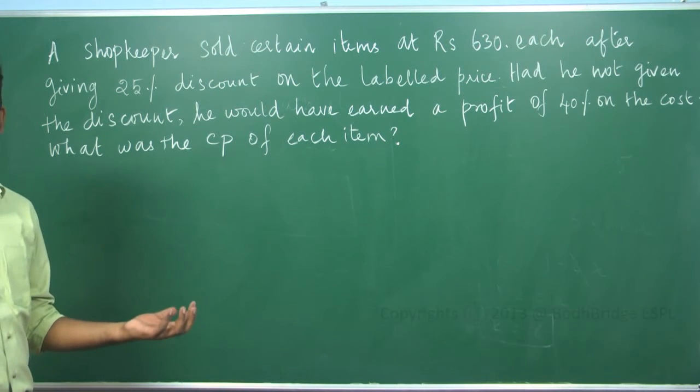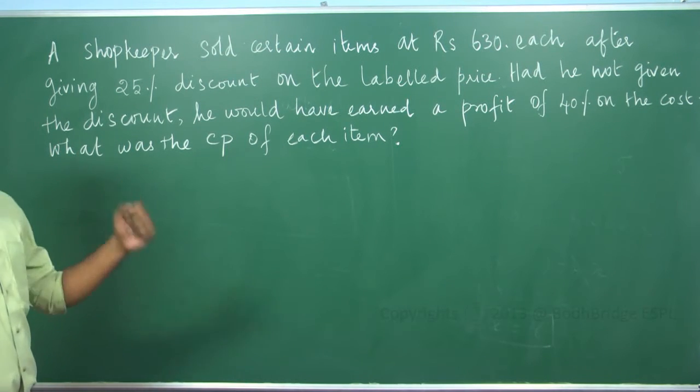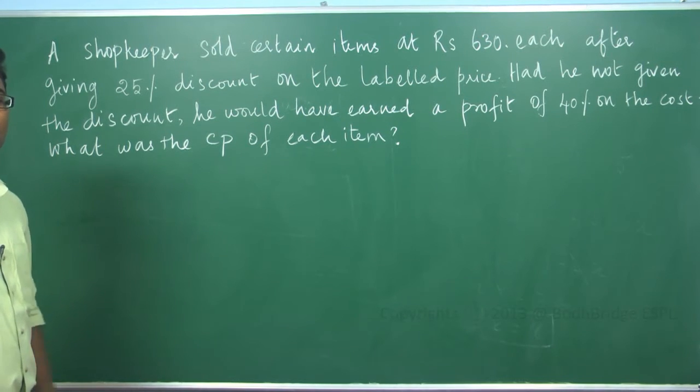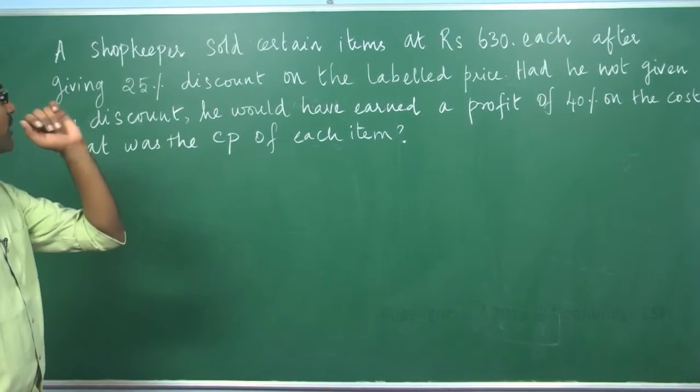The number of items is unknown for Rs 630 after giving discount of 25%. What it means? From label price, we will give discount.